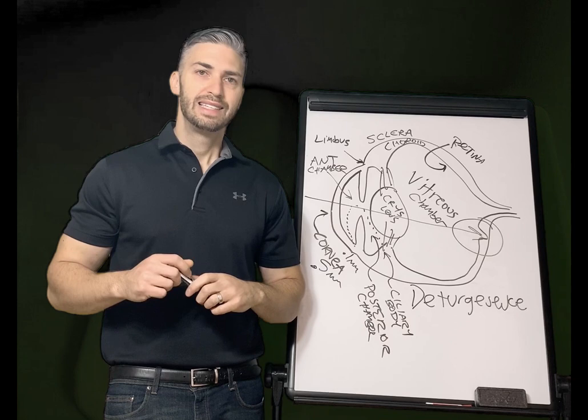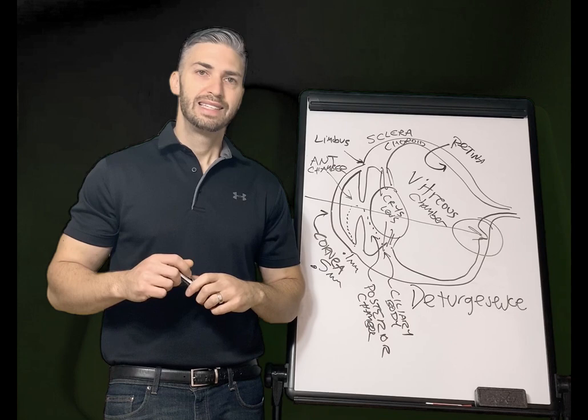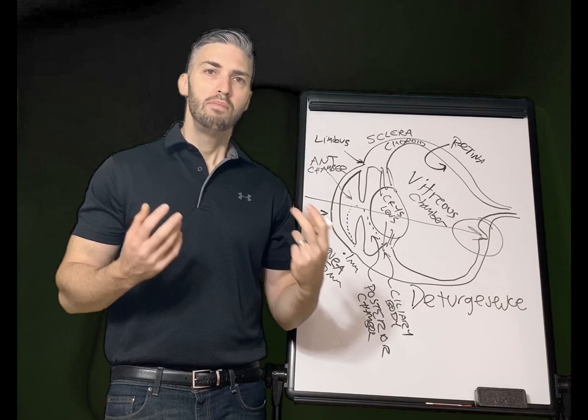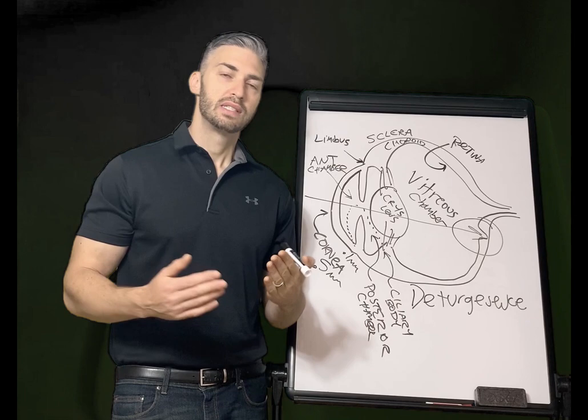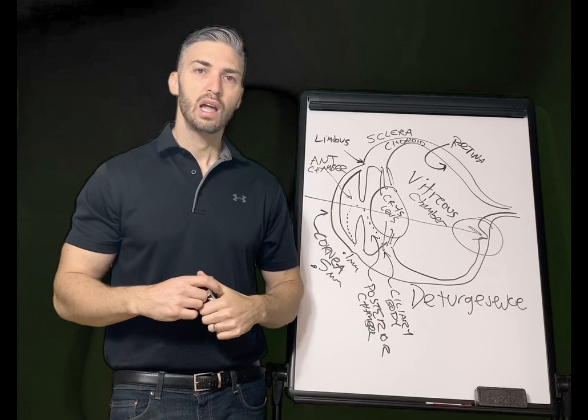The innermost and third layer of the tear film is the mucoid layer — like mucus. It's produced by goblet cells in the conjunctiva, and its purpose is to turn the cornea, which is hydrophobic, into a hydrophilic state because it's sticky, allowing the tear film to adhere to the cornea.